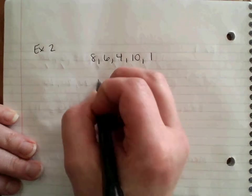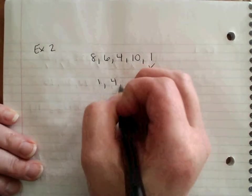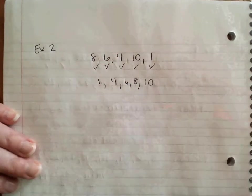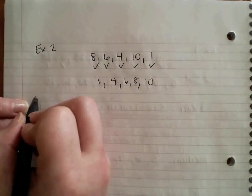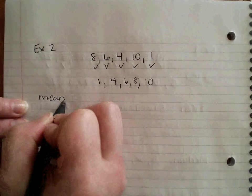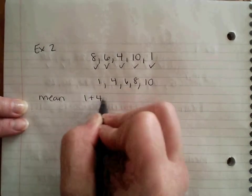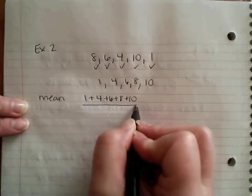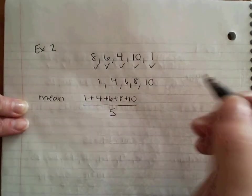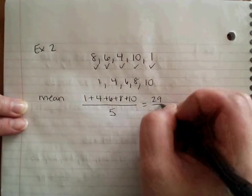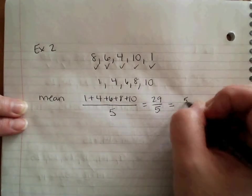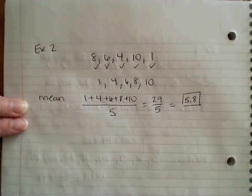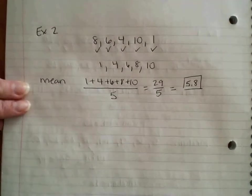Now let's check your answers. First thing you should do is order them from least to greatest. So I've got 1, 4, 6, 8, 10. My mean is where I'm going to add all these up. 1 plus 4 plus 6 plus 8 plus 10. I have 1, 2, 3, 4, 5 numbers, so I'm going to divide by 5. When I add them all up, I get 29. 29 divided by 5 gives me 5.8. My mean is 5.8.